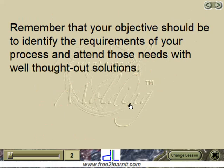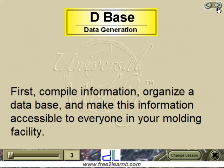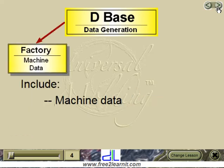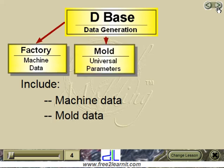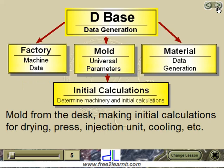Remember that your objective should be to identify the requirements of your process and attend those needs with well-thought-out solutions. Universal Molding is a discipline that promotes a structure of organized events. First, compile information, organize a database, and make this information accessible to everyone in your molding facility. Include Machine Data, Mold Data, and Material Data — all used for initial calculations.